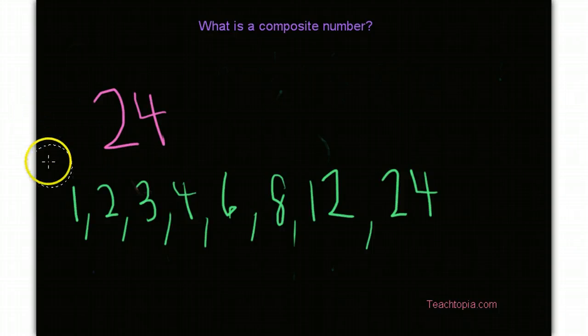Is 24 divisible by more than just one and itself? You bet. Therefore, it is a composite number.